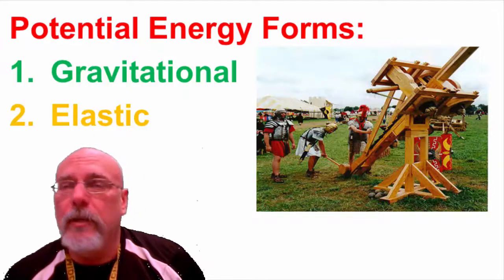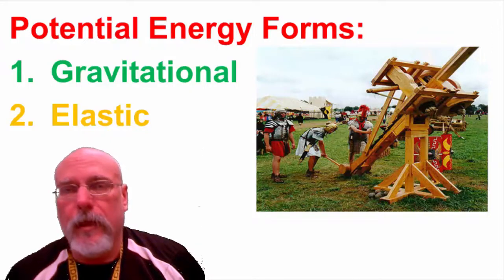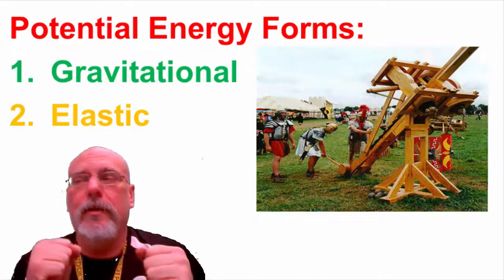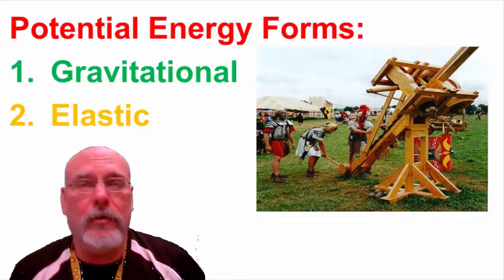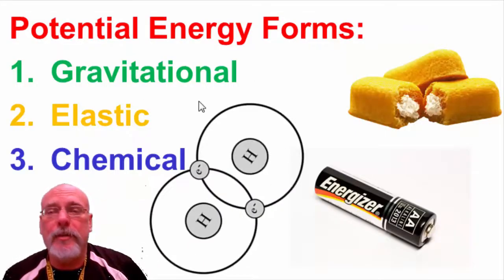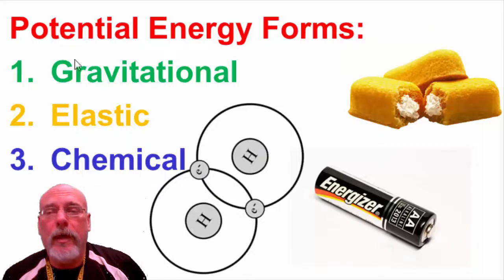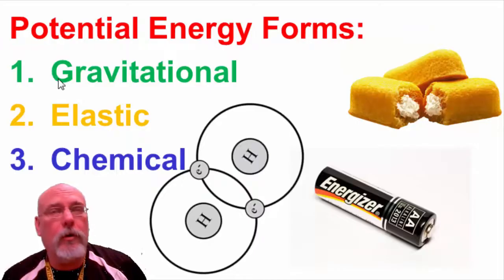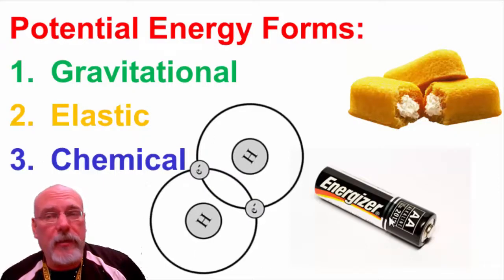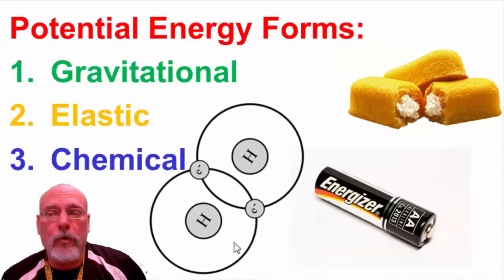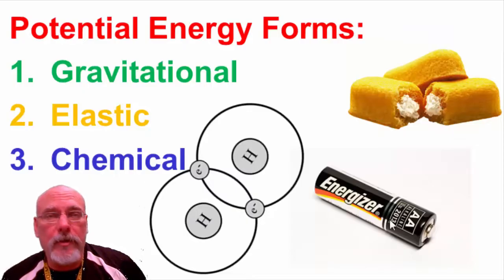The further you stretch an object, the greater the amount of elastic potential energy it will have. Chemical energy is the energy stored in molecules. When those molecules are broken down — like when you eat food — energy is released. For example, if you burn hydrogen gas it will explode and give off heat energy, which came from the stored chemical energy in the bonds. Batteries are also a form of chemical energy stored with acid and metals.